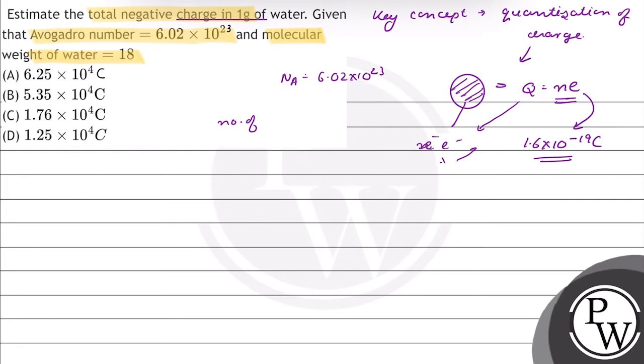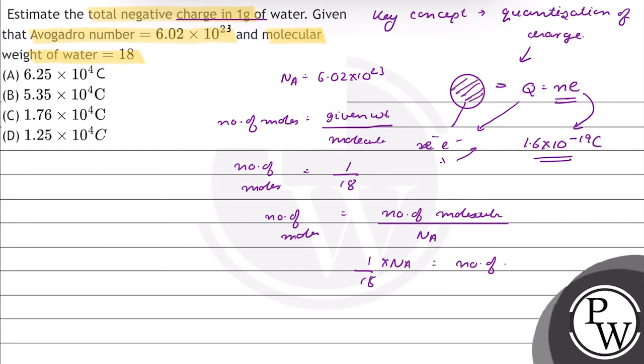Number of moles equals given weight divided by molecular weight. Given weight is 1 gram, molecular weight is 18 grams. Also, number of moles equals number of molecules in the sample divided by Avogadro number Na. So 1/18 × Na equals the number of molecules of water in 1 gram.